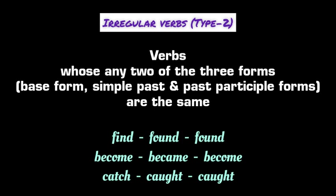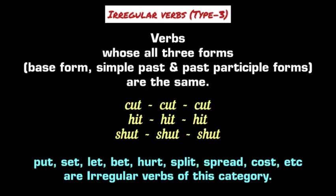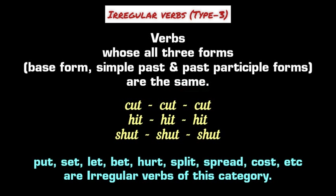The third type of irregular verbs are those that do not inflect in simple past tense or past participle form — the past form and past participle form are the same as their base form. For example, the verb 'cut' remains 'cut' in both simple past and past participle forms without any inflection. Other irregular verbs like 'hit' and 'shut' also do not inflect. 'Let,' 'hurt,' 'spread,' and 'split' are further examples of this type.